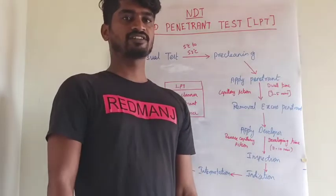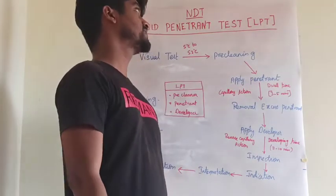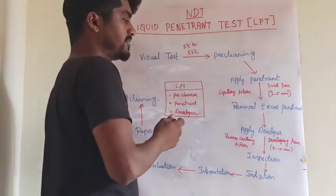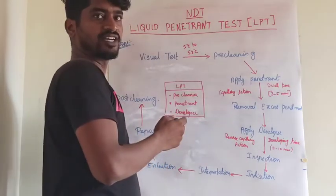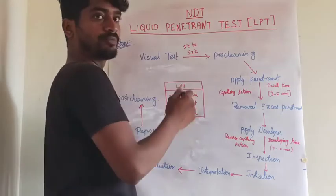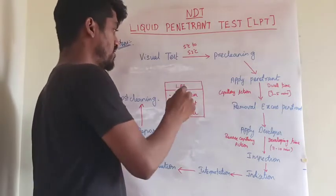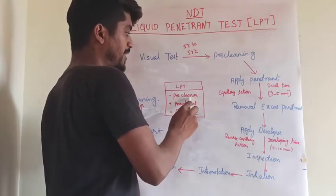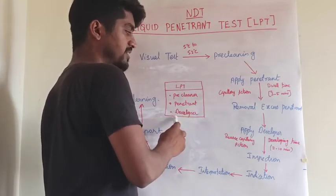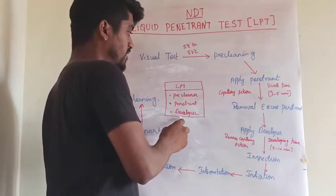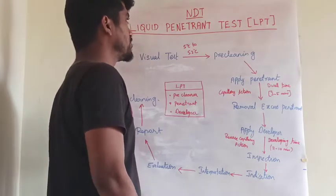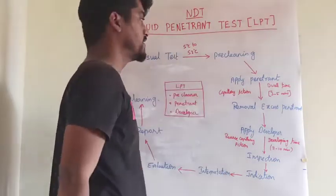Now we are going to see the step-by-step process of liquid penetrant test. The three main ingredients used to carry out the liquid penetrant test are: pre-cleaner, penetrant, and developer.